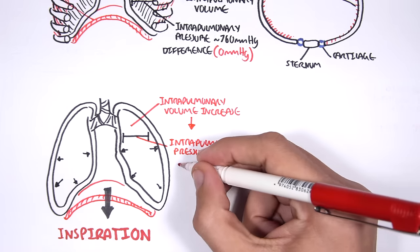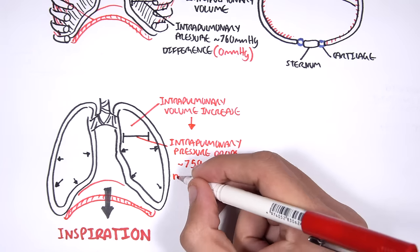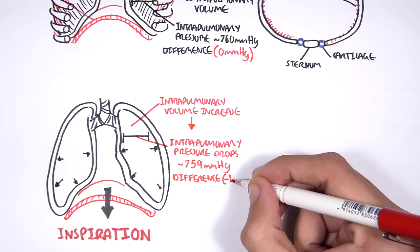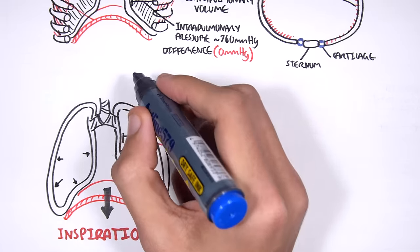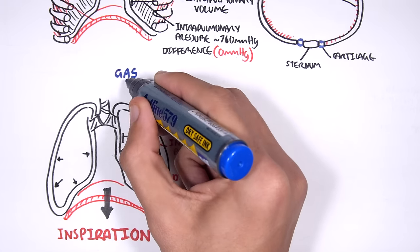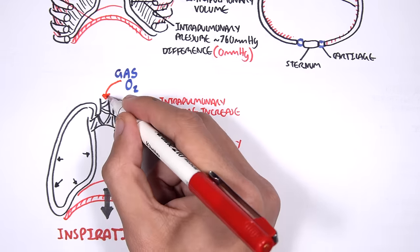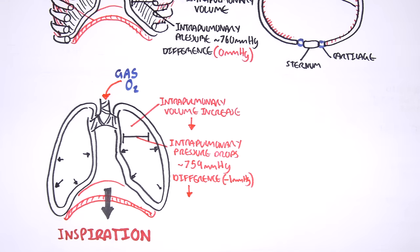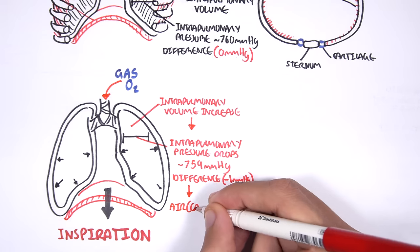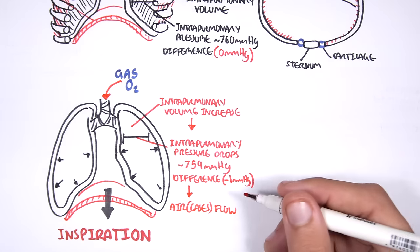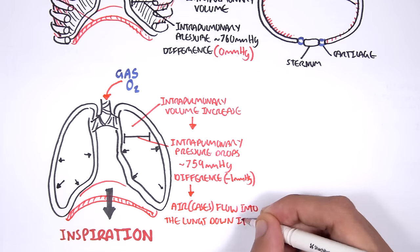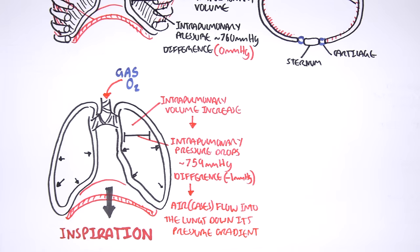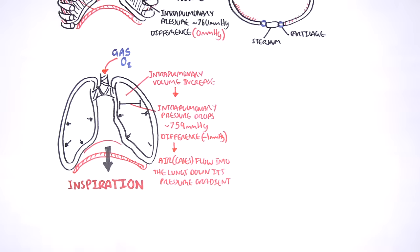In respect to the atmospheric pressure, there is a difference of negative 1 mmHg — the intrapulmonary pressure is 1 mmHg below atmospheric pressure. Because of the gas pressure rule, oxygen will flow into the lungs down its pressure gradient, from an area of high pressure to an area of lower pressure. After inspiration, we automatically have expiration.